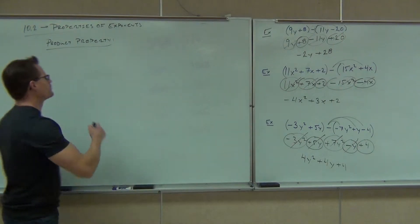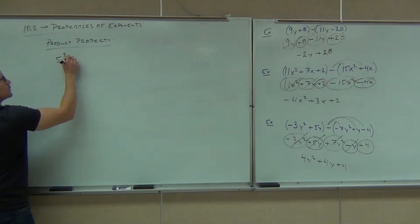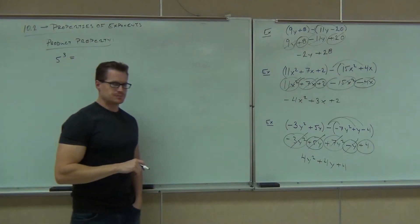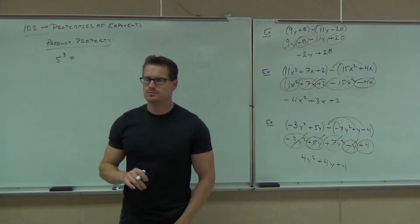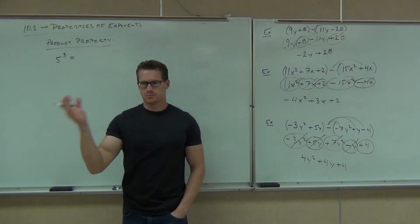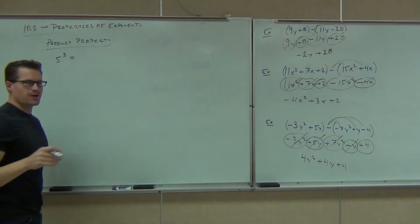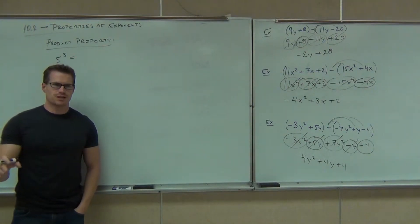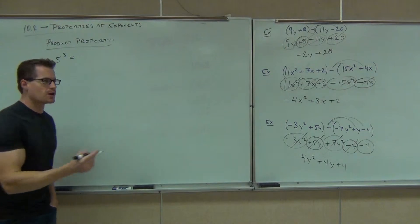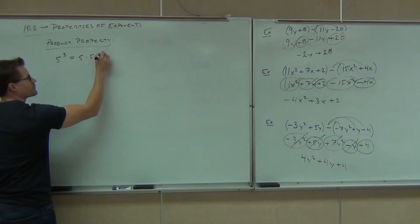It starts with this question: what does 5 to the 3rd actually mean? 5 times 5 times 5. So it doesn't mean 5 times 3. This is actually not 15 — it's 125 because you're doing 5 times 5 times 5.